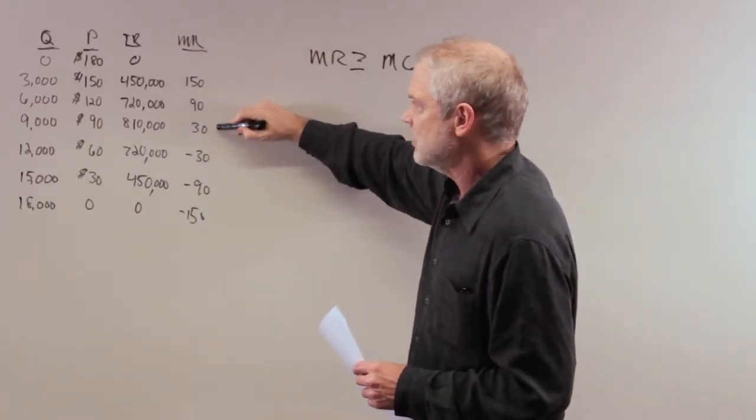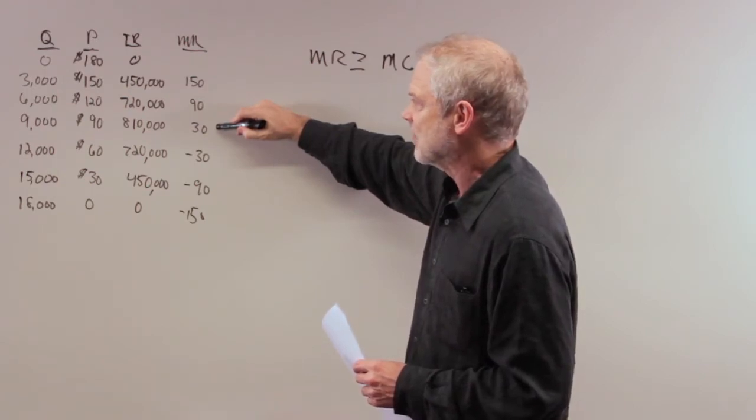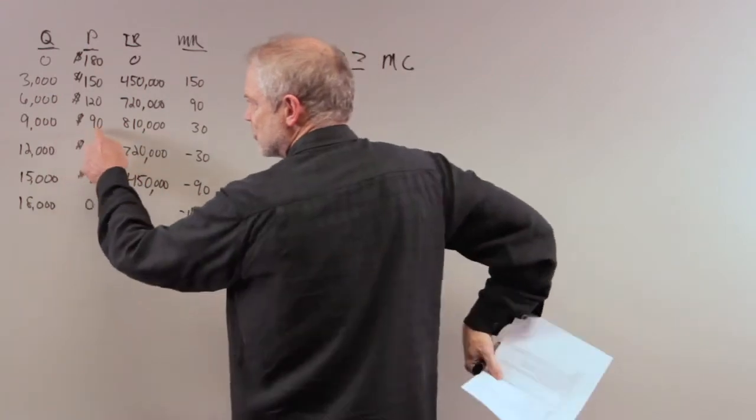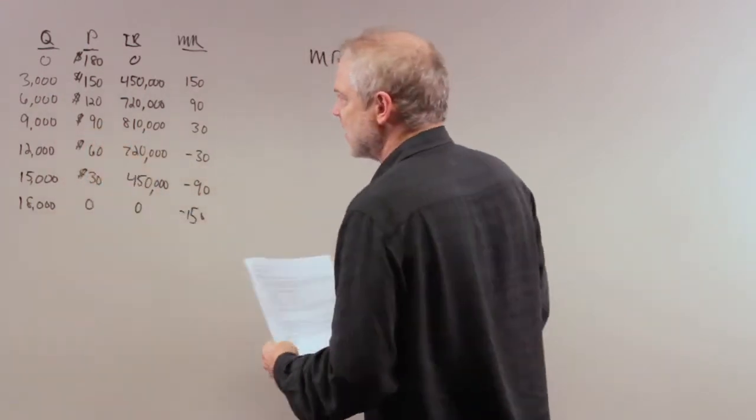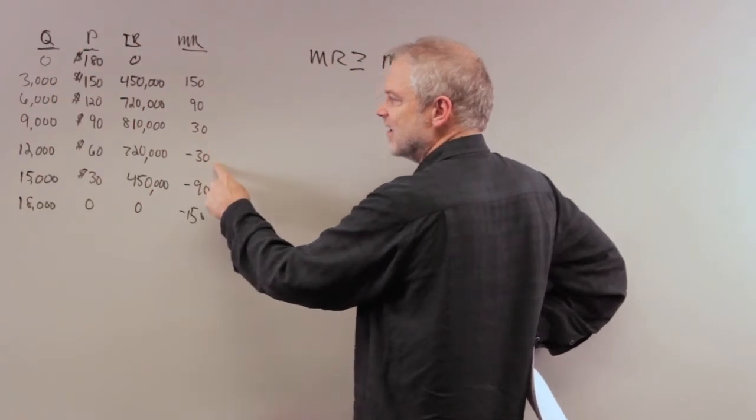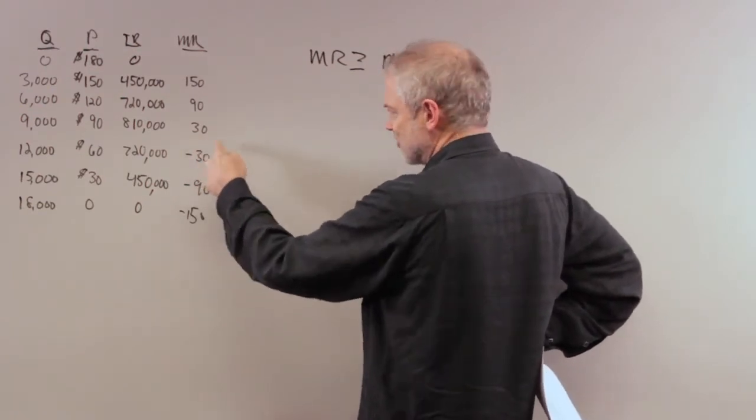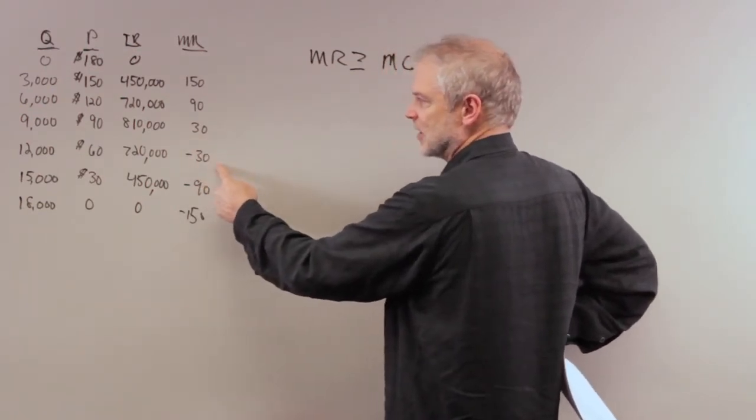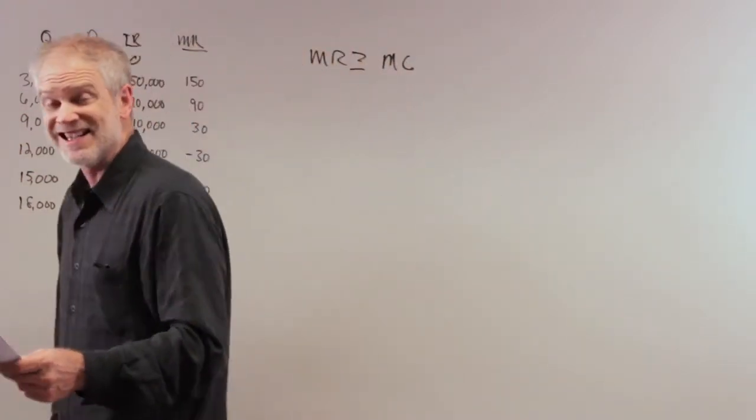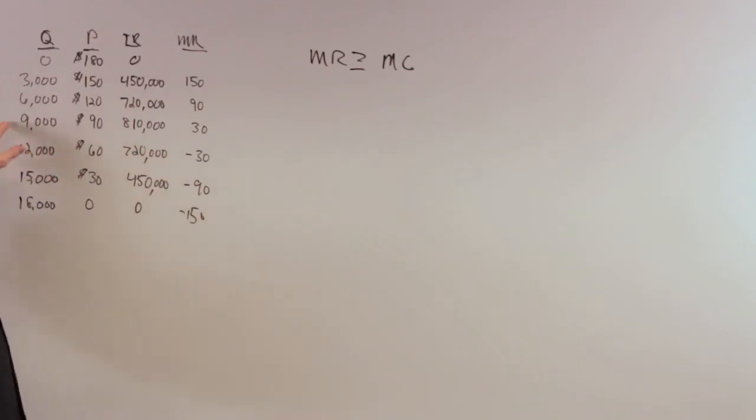The monopolist is going to stop at 9,000 subscribers and charge a price of $90. If it goes further, marginal revenue is negative while marginal cost is zero, so it'd be losing money. The answer to number one is $90—that's the price that maximizes revenues for this monopolist.